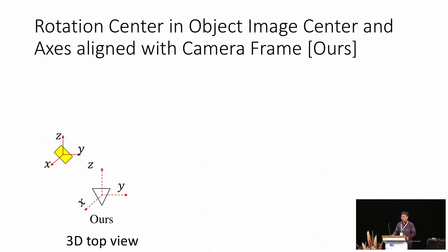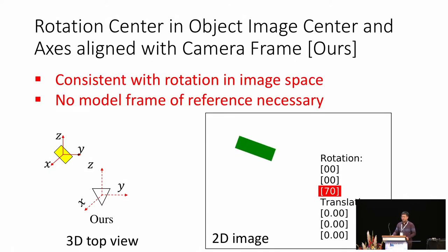To avoid this complication, we use the rotation coordinate centered at the center of the estimated pose, while its axes are aligned with the camera frame. Using this frame, the rotation predicted will be consistent with rotation in the image space, and we do not require the network to memorize and recognize the model frame anymore.